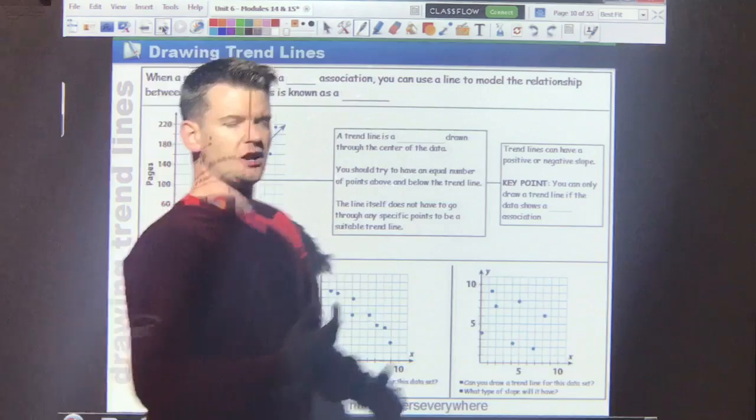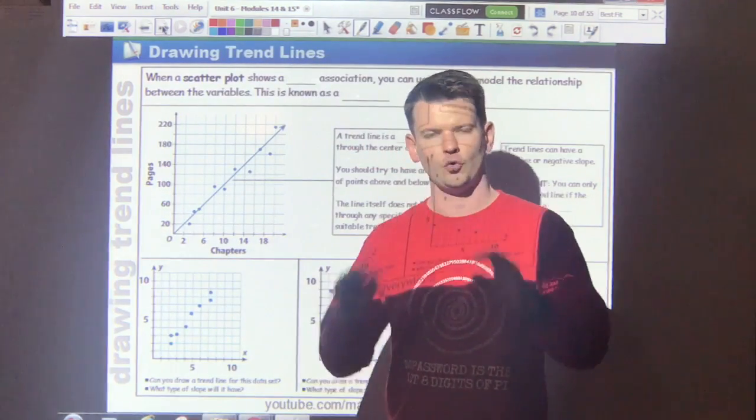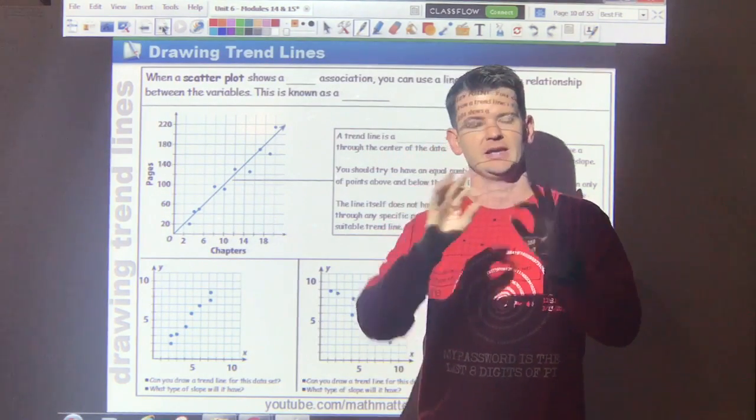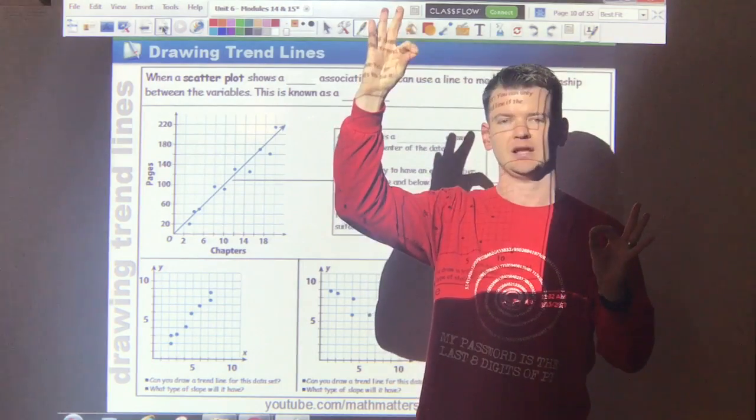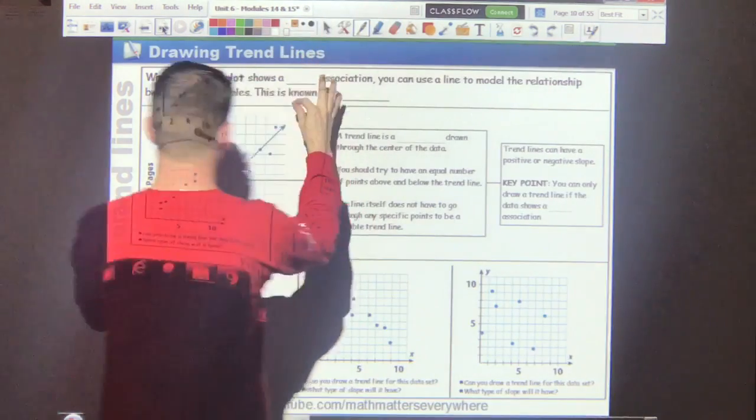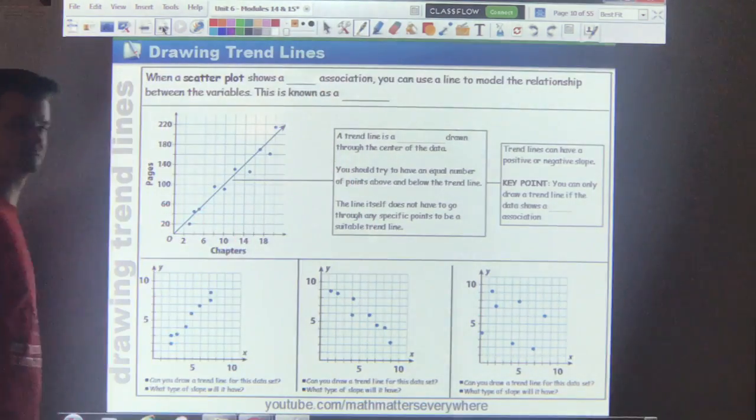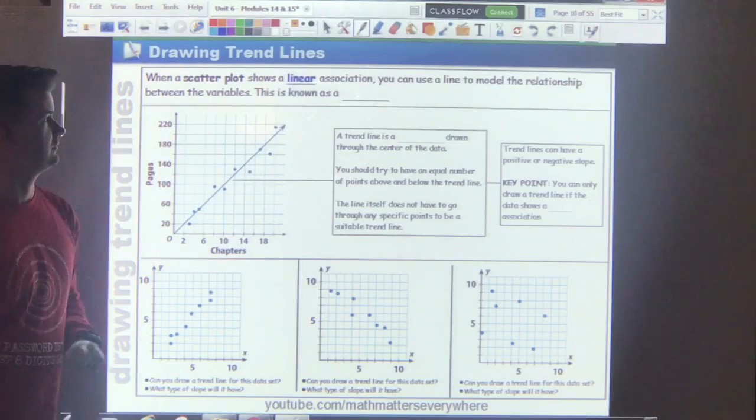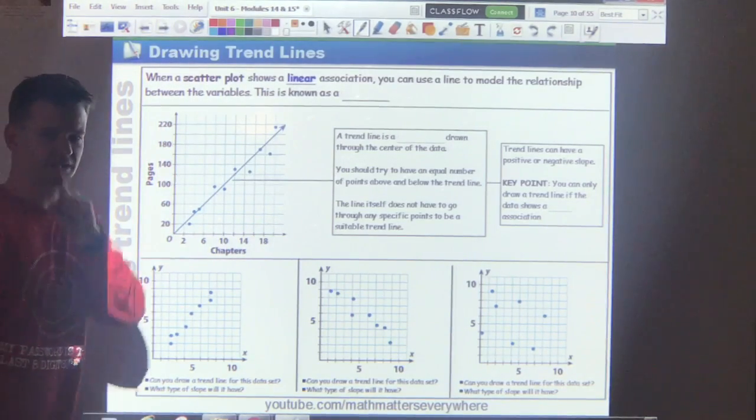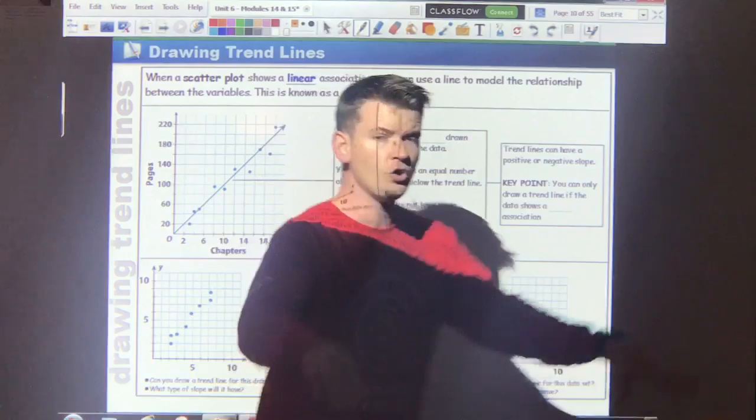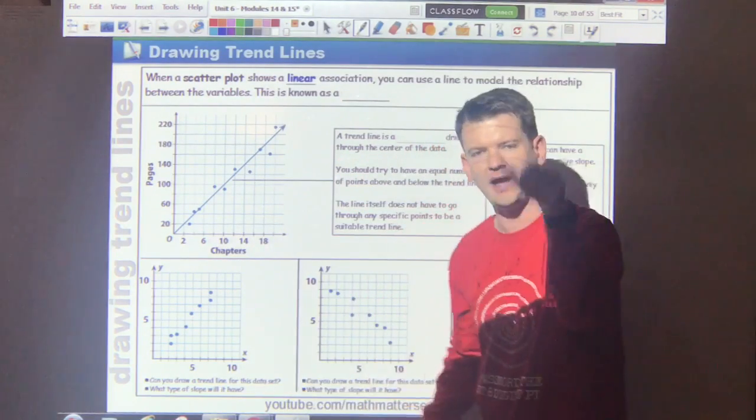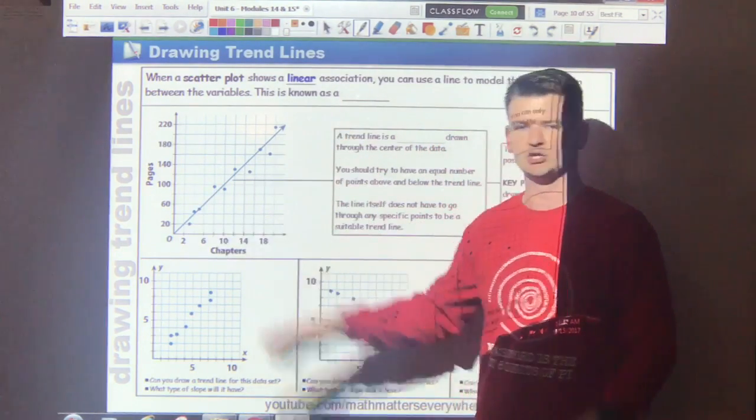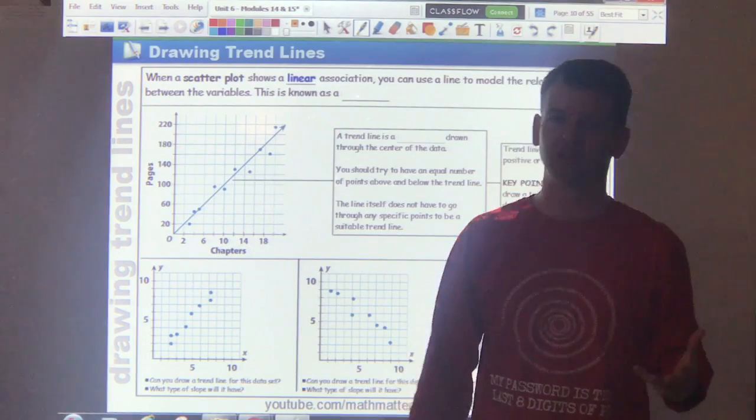Once we understand what a scatter plot is, we can talk about something called a trend line, or a line of best fit. It is a line, a straight line, that best fits the data. Only in linear associations, though. You can only draw a trend line, or a line of best fit, if you have a linear association, which means most of the data falls along a straight line.